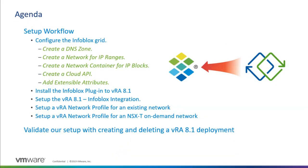We will be taking a look at the setup workflow — everything from configuring the Infoblox grid, installing the Infoblox plugin to vRealize 8.1, and setting up the integration. We will be setting up a VRA network profile for an existing-type network and for an NSX-T on-demand network. At the end of the video we will validate our setup by creating and deleting a VRA 8.1 deployment.